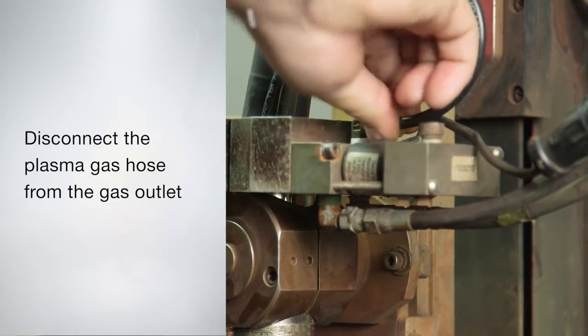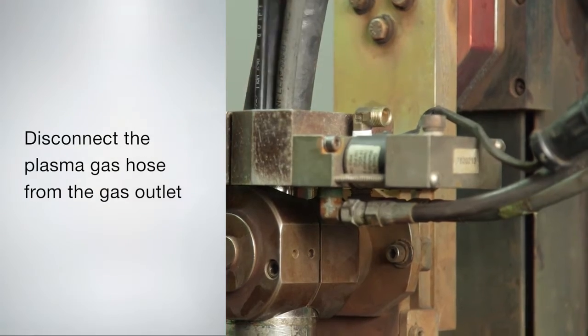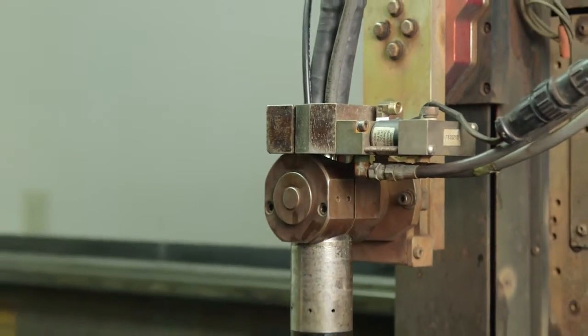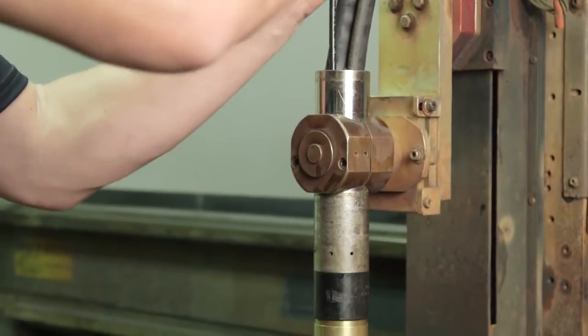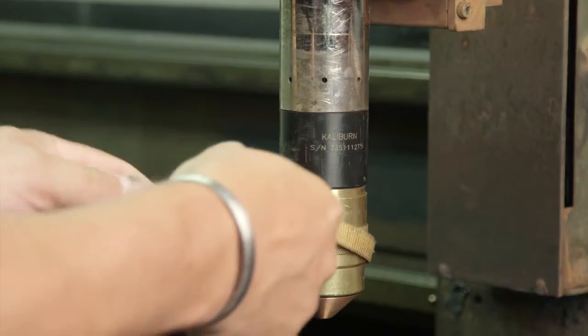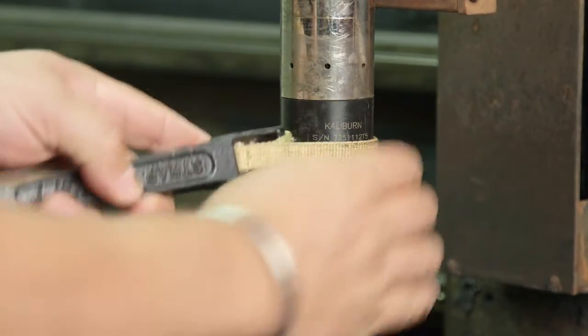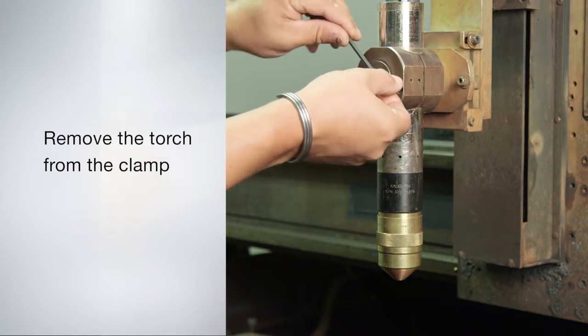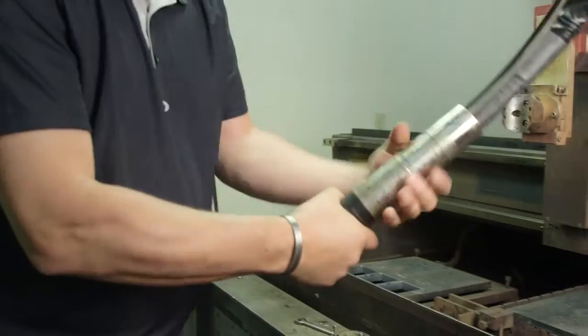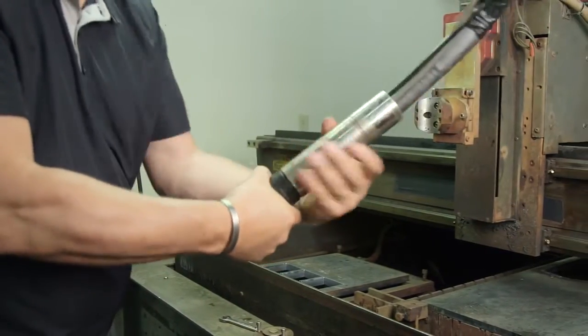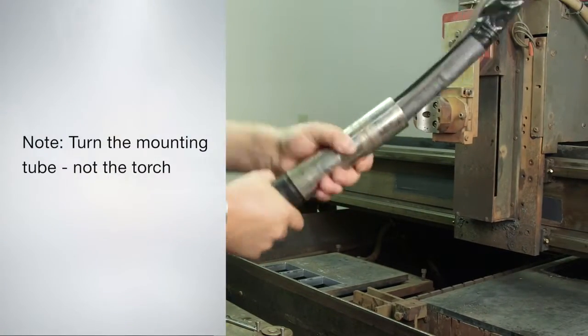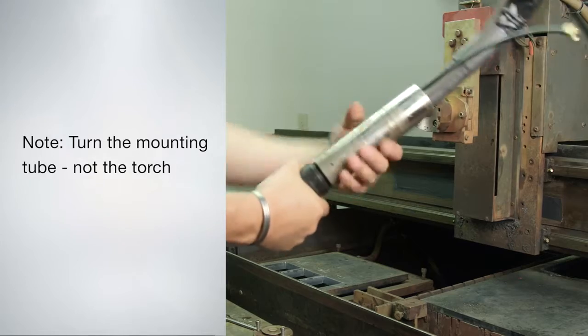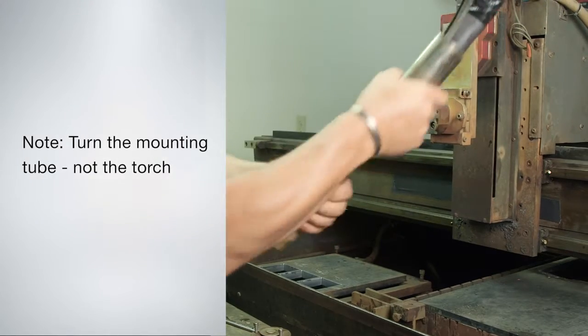Disconnect the plasma gas hose from the plasma gas outlet on the two-gang manifold, located at the top of the torch handle, also referred to as the mounting tube. Using a strap wrench, loosen the torch and then remove the torch from the torch clamp. Most torches are held in a pinch block that clamps onto the mounting tube. Unscrew the mounting tube from the back of the torch. Turn the mounting tube, not the torch, to prevent twisting of the hoses and wires that are attached to the torch.